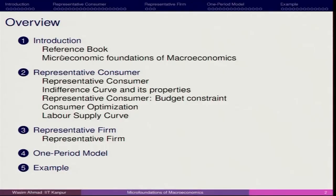Since there will not be any future period, we are not going to talk about how the representative consumer's savings will help in the future. The purpose is to understand the behavior of different agents in the current period environment and draw inference for the macroeconomic picture. In the one-period model, we will have a setup involving the consumer and leisure — examining what happens when a representative consumer earns real wages and how they utilize that income.